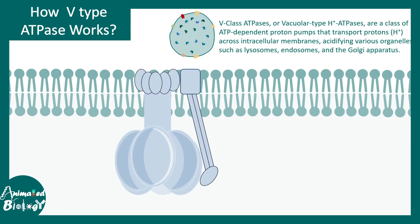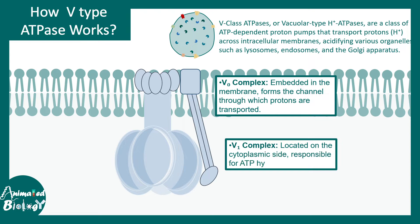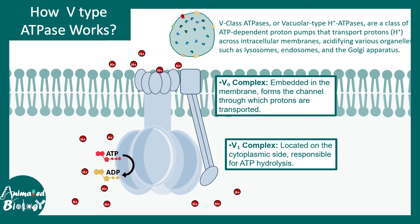V-type ATPase is enriched in vacuolar membranes, especially lysosomes, where its job is to acidify the compartment. It has two major components: the V0 complex, embedded in the membrane, and the V1 complex on the cytoplasmic side. These pumps transport protons against the concentration gradient, which requires ATP hydrolysis to drive the process. V-type ATPase is enriched in lysosomes, endosomes, and any compartment that acidifies its contents.